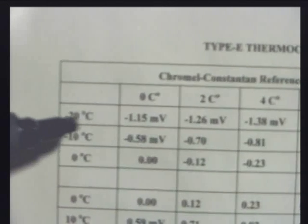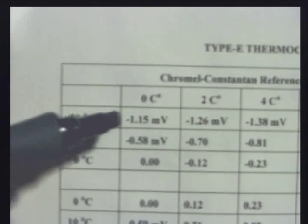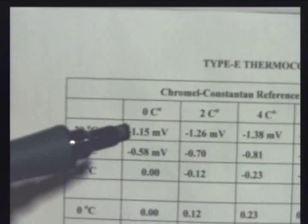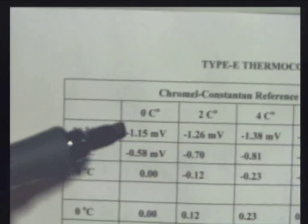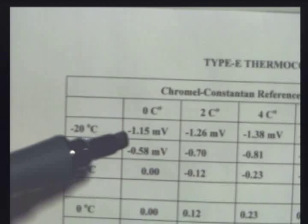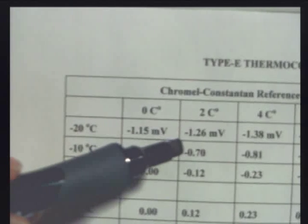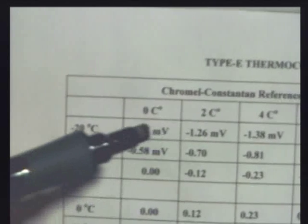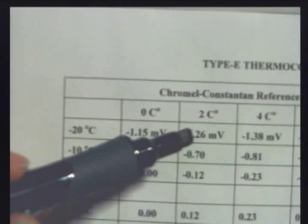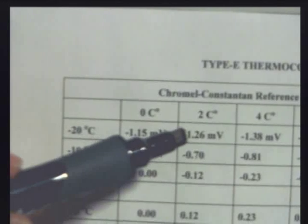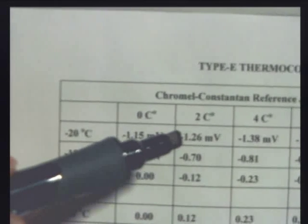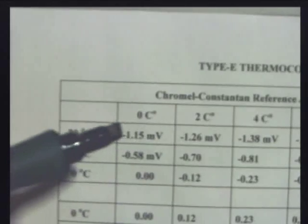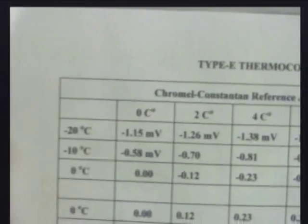So there's minus 20. There's 0. That's minus 20, that's minus 22. It's between minus 20, which is minus 1.15 millivolts, and minus 22, which is minus 1.26. It's almost smack in between. So there's minus 20, there's minus 22. My temperature difference must be minus 21, halfway between.